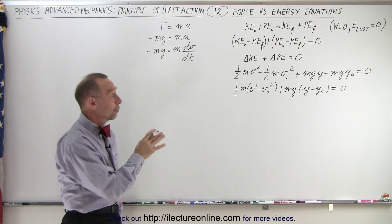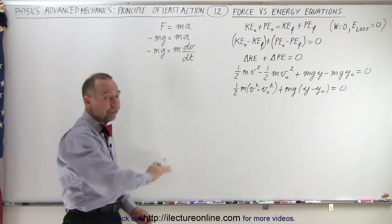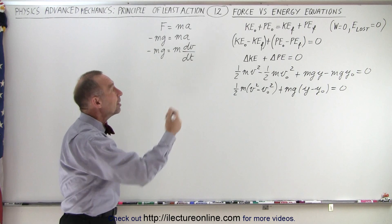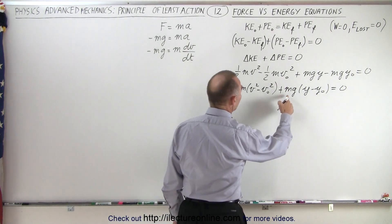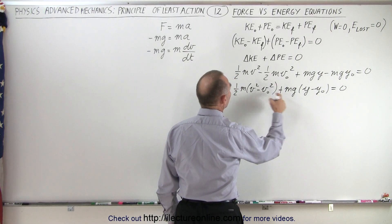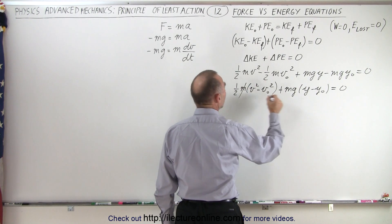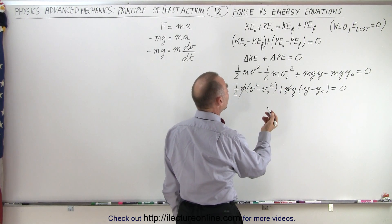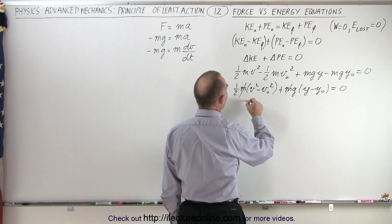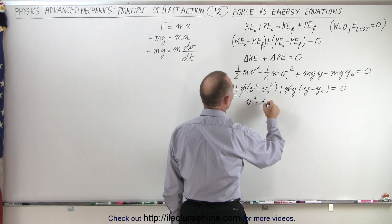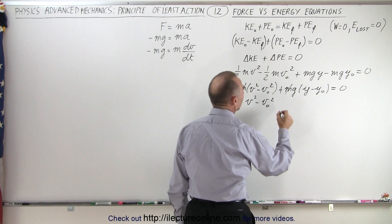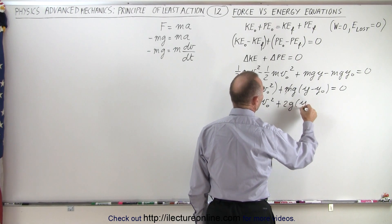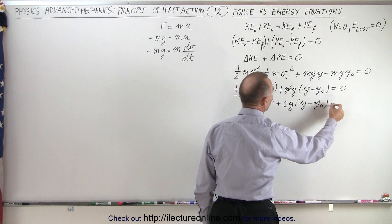We want to find the final velocity based on the initial conditions. Notice that the M's cancel on both sides, so we can get rid of M. Then we multiply everything by two, giving us V_final squared minus V_initial squared plus 2G times Y_final minus Y_initial equals zero.